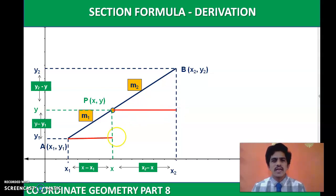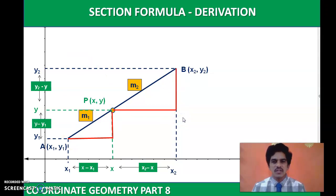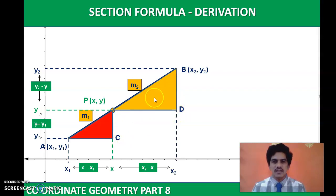Now I draw two parallel lines to the x-axis from A and P, shown in red. Similarly, I draw two lines parallel to the y-axis from P and B. By doing this, we have actually formed two triangles. The intersecting points are C and D. These two triangles are very important — that is why we discussed similar triangles — because we get similar triangles in this derivation.